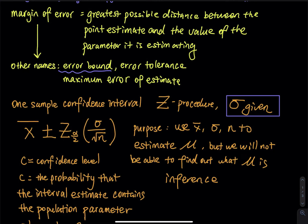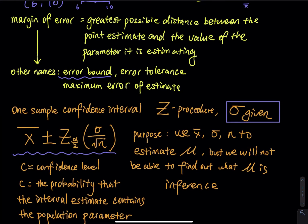For Z procedure, here is the formula. We start with a point estimate, which is X bar. And then we plus or minus Z subscript alpha divided by 2, multiplied by the standard error: sigma divided by square root of n. The purpose of doing this is I am asking you to use sigma, X bar, and the sample size to estimate mu. After you finish, you will get a confidence interval with a lower limit and an upper limit.